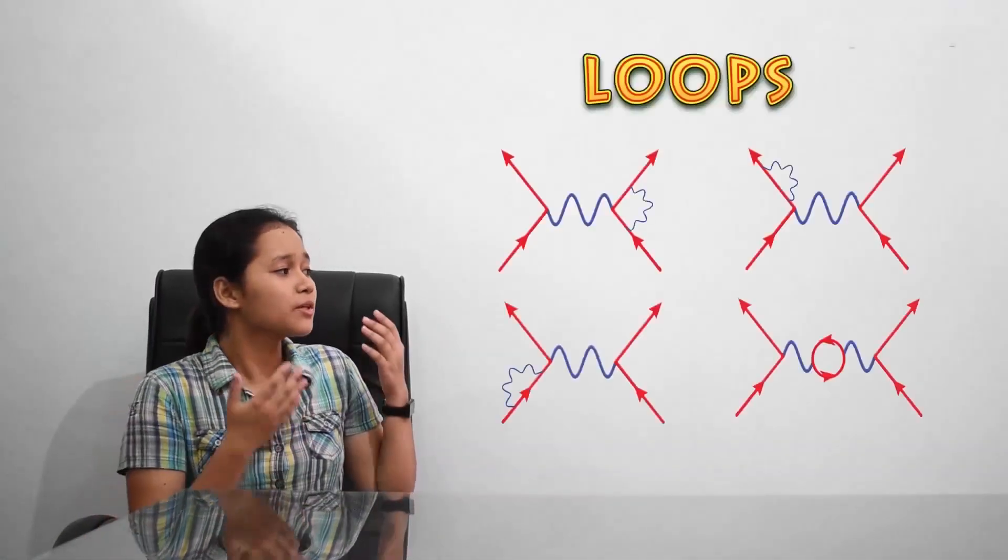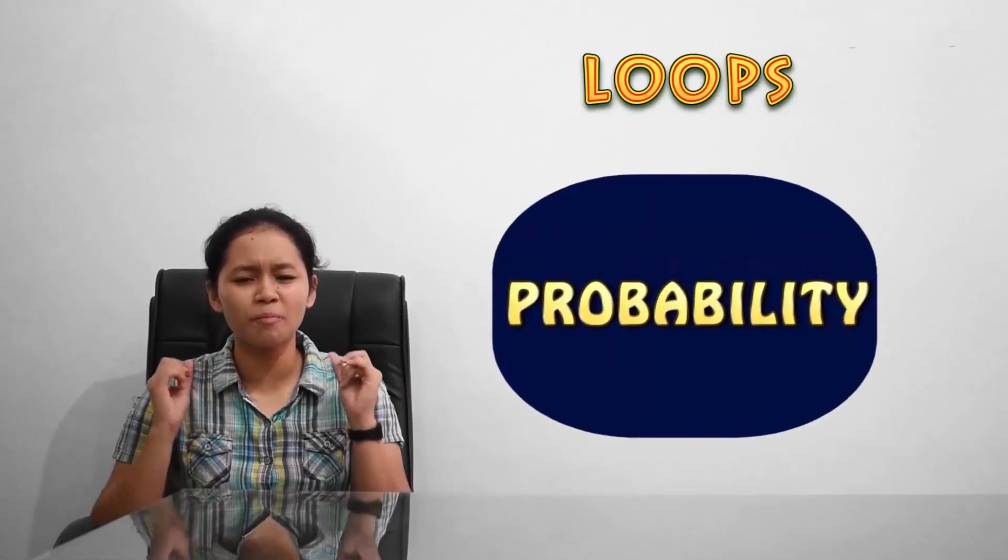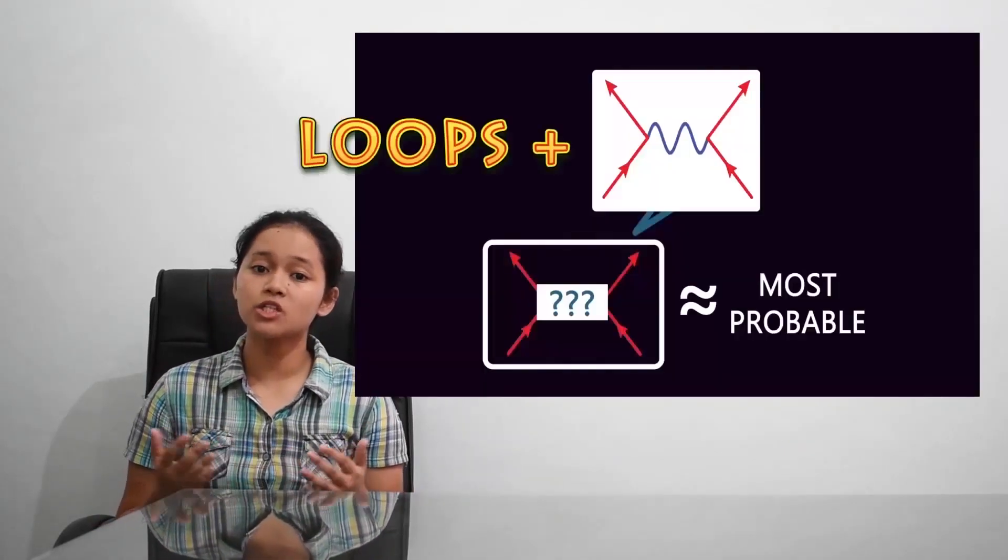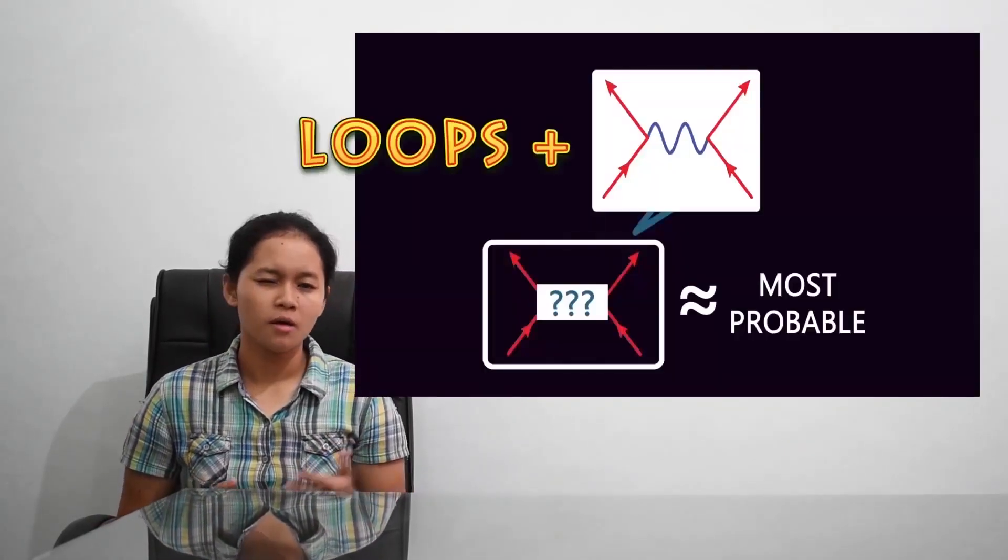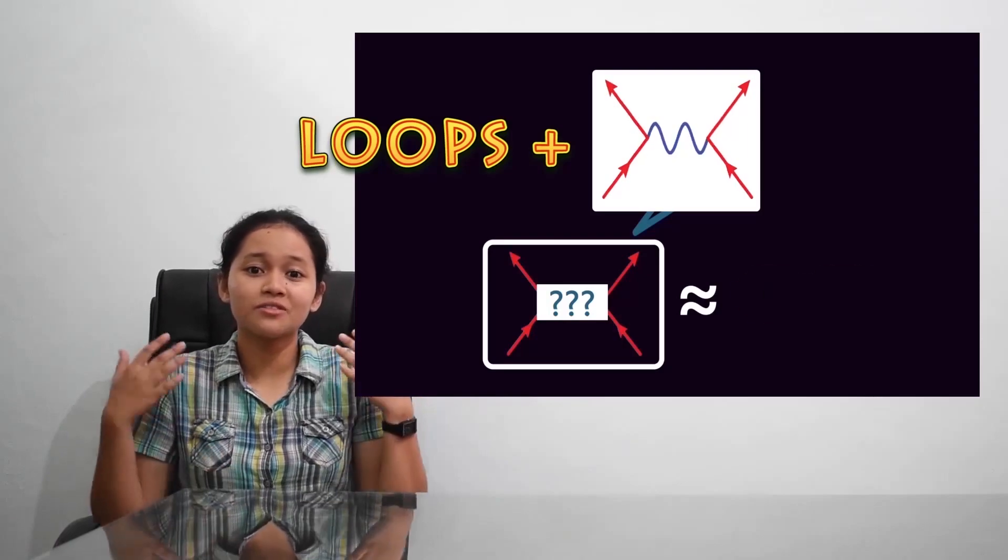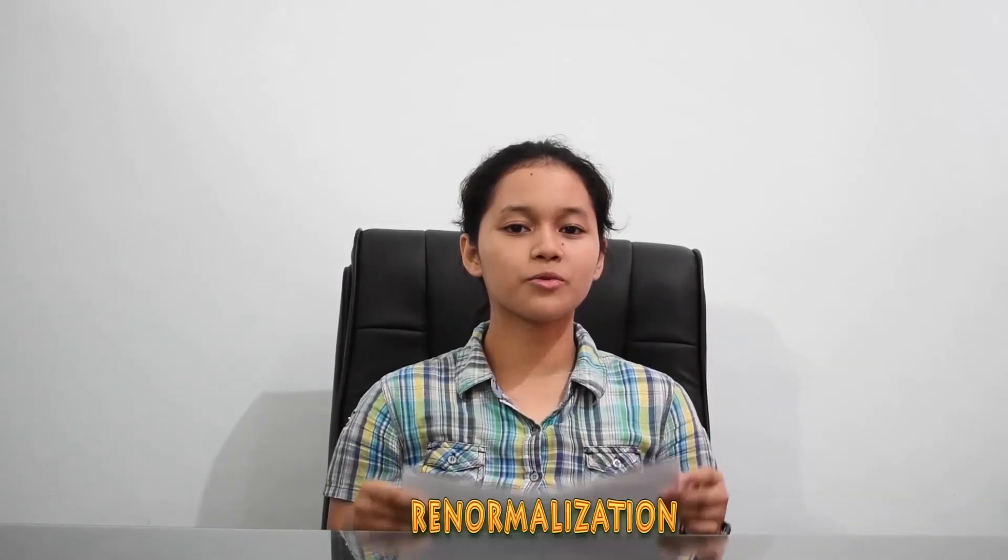But wait! There's an exception to using perturbation. Diagrams called loops actually add up to contribute a bigger probability, meaning we need to include them in our approximation. But when scientists did that, it led to an infinity. This required them to use a mathematical technique called renormalization.